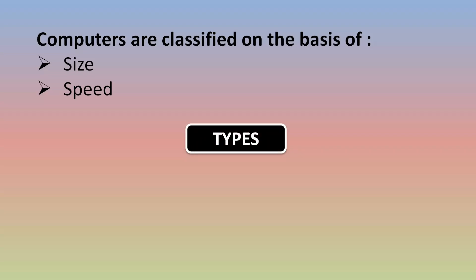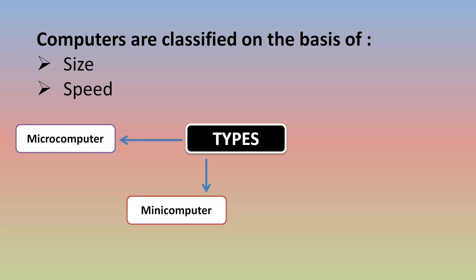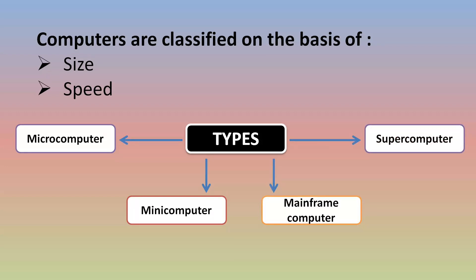First microcomputer, second mini computer, third mainframe computer and fourth supercomputer. So let's learn about all these types one by one.